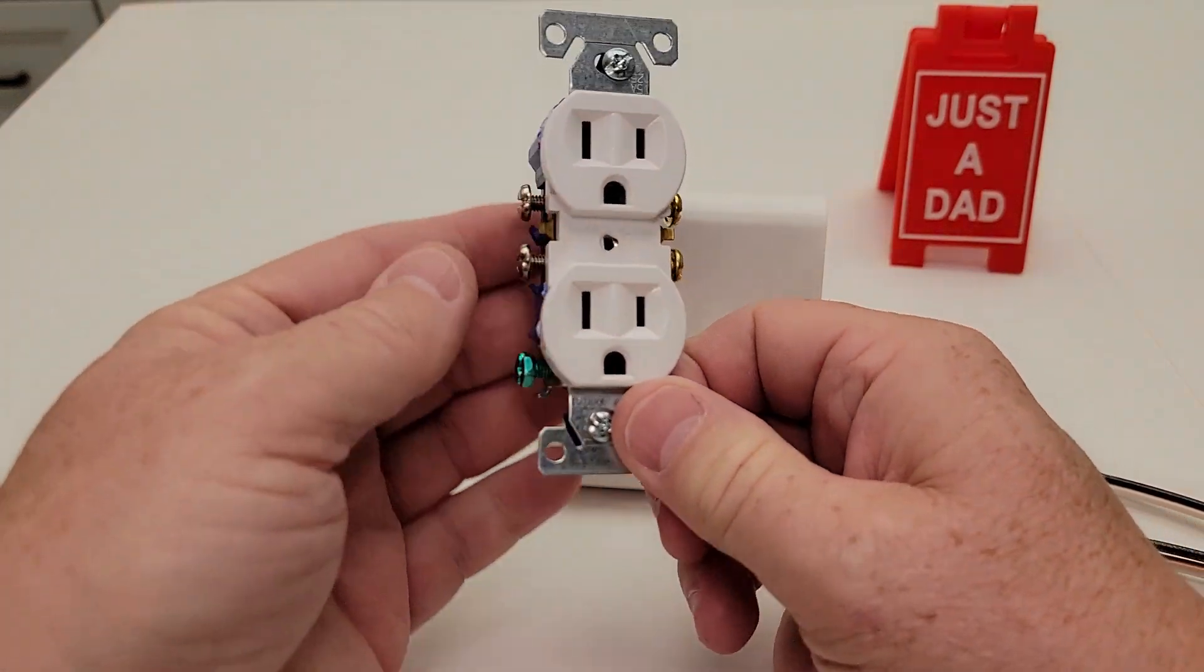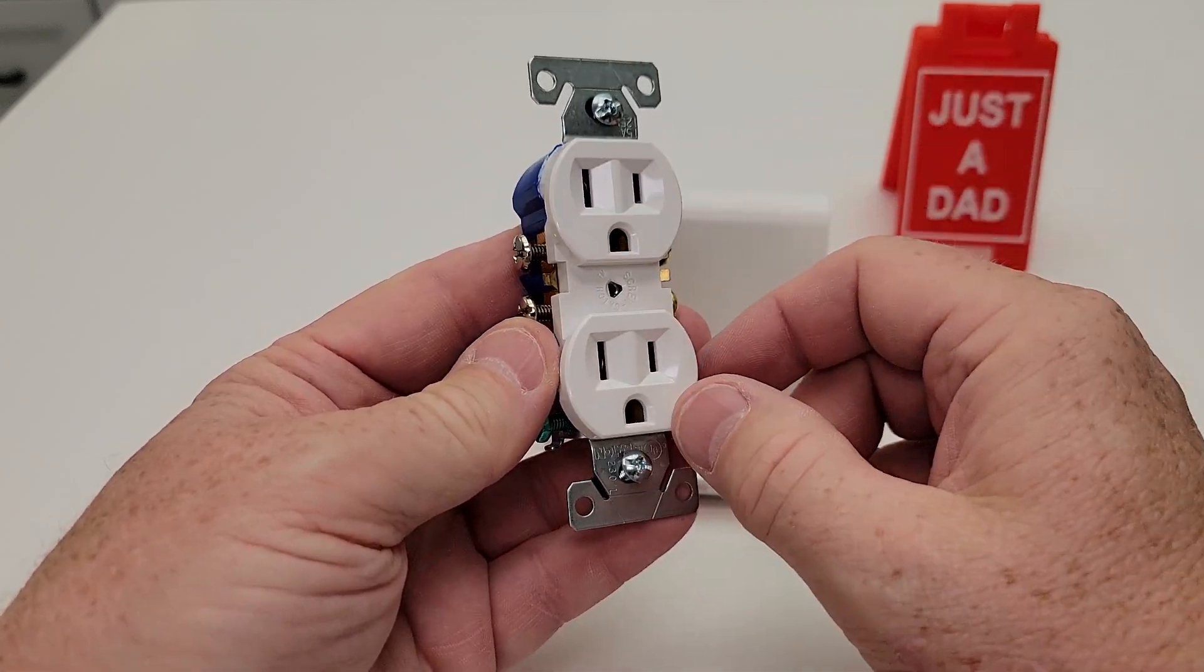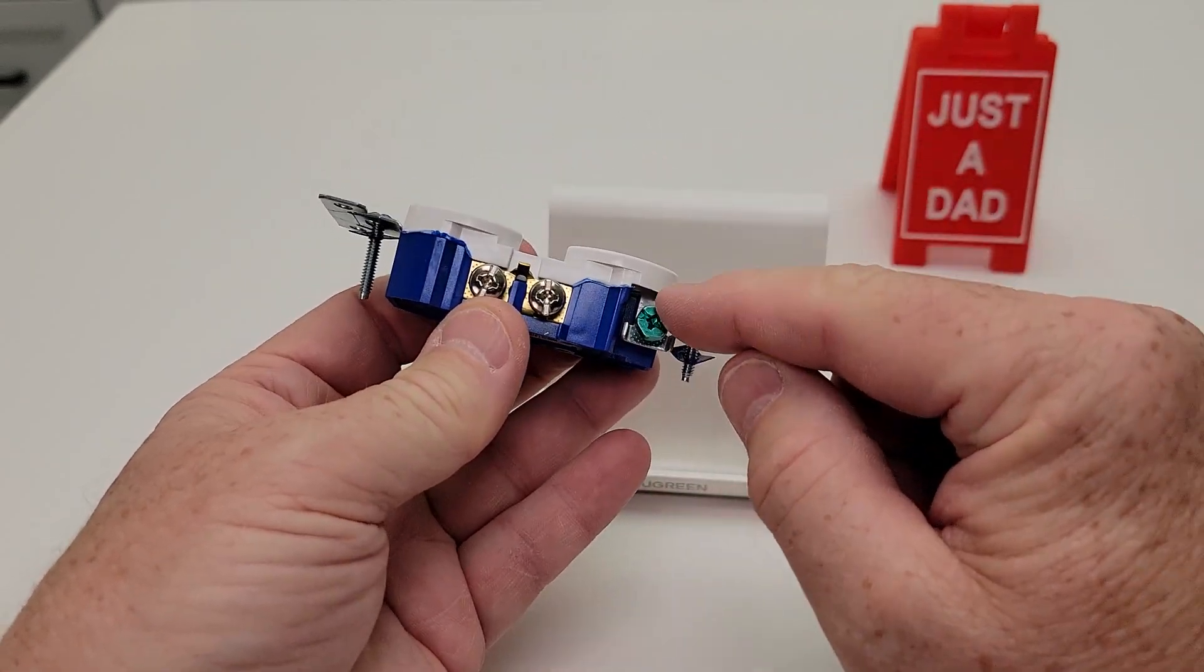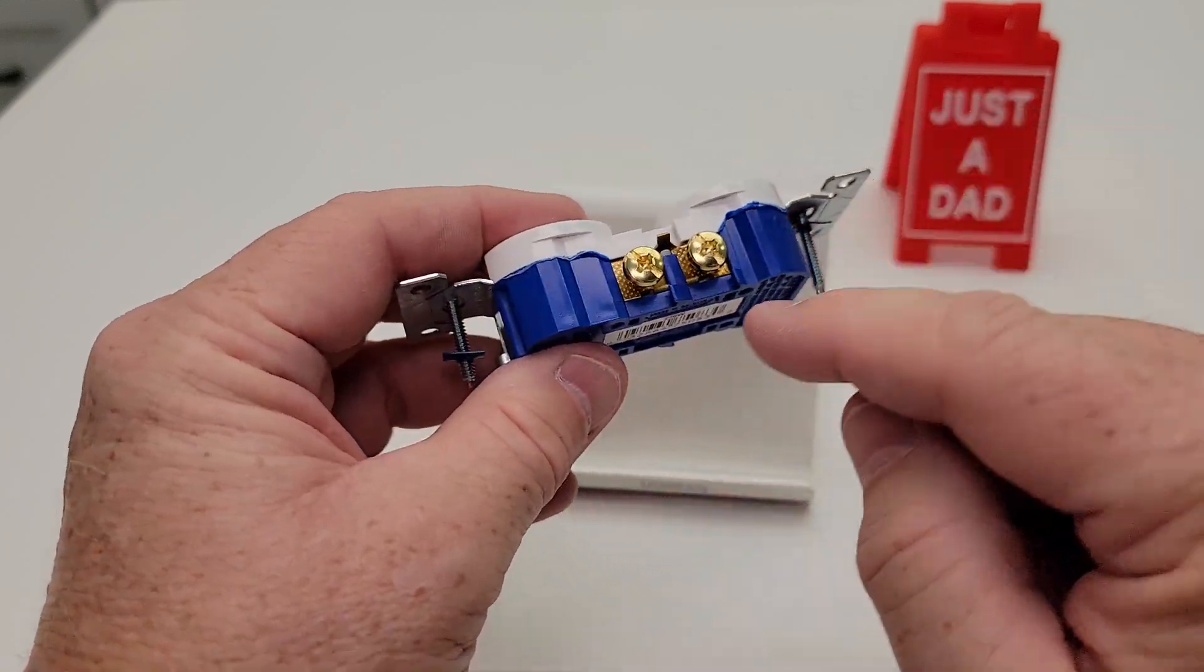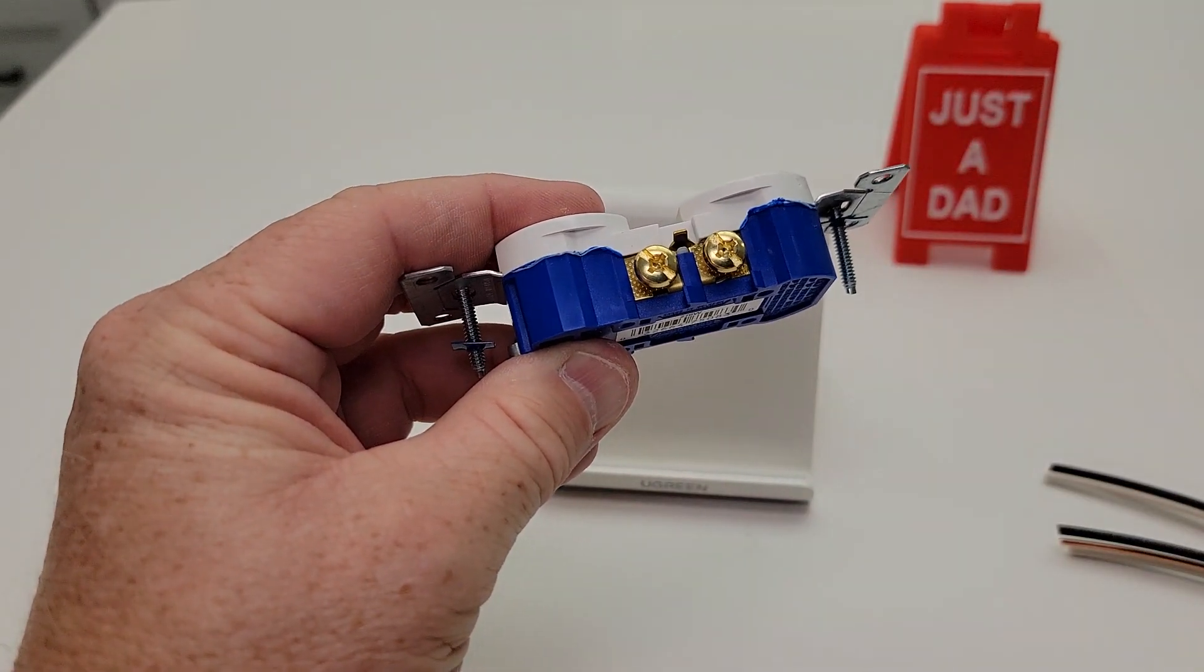The reason I like this outlet is it's not tamper-proof receptacles. Things plug right into it. We've got our ground wire, these white screws are the neutral side, and these gold screws are the hot side.